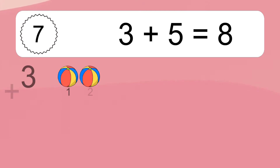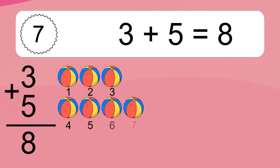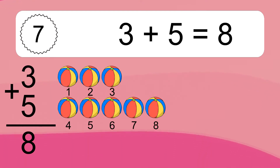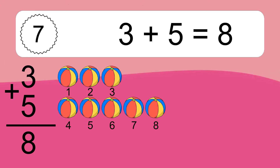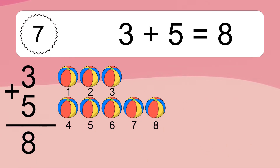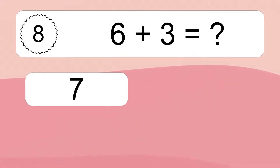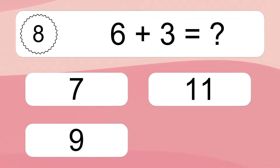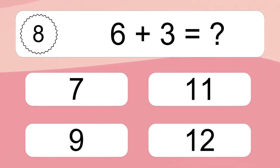3 plus 5 equals 8. Let's count it: 1, 2, 3, 4, 5, 6, 7, 8.